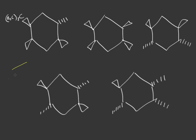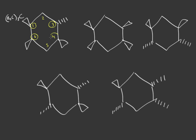You could draw the chair conformation of every single molecule, but that's quite tedious. A trick you can do to figure out equatorial and axial positions is to number the carbons one through six. If it's an odd number and they're both up, then they're either both equatorial or both axial. If it's even numbers and they're both up, they're also either both equatorial or both axial.